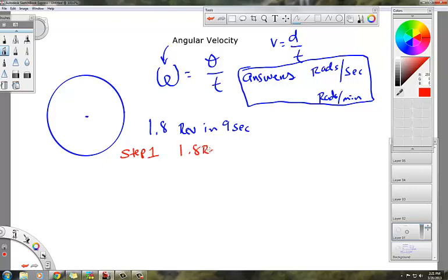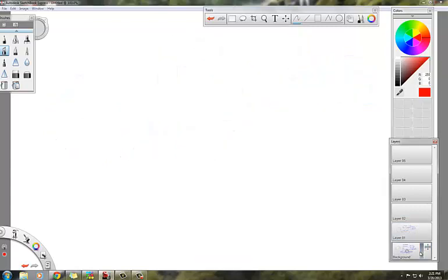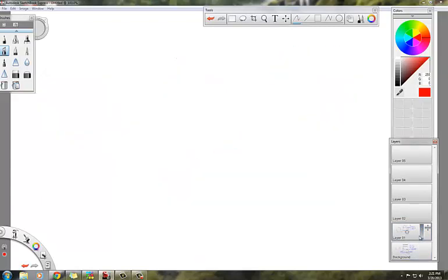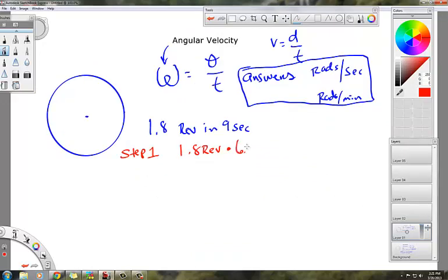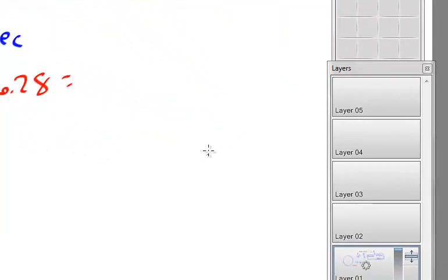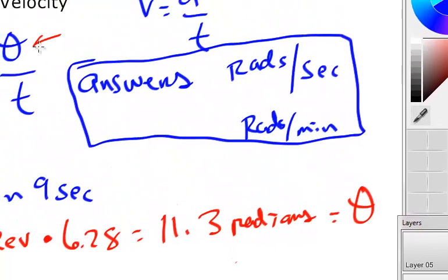Step 1 in doing this. You take the 1.8 revolutions, and you're going to multiply this, just like we did back here, by 6.28. So I'm going to take this step, multiply this by 6.28, and that is going to give me somewhere around 11.3 radians. Now, if we take this answer, which this right here is equal to this theta right here. So that's where all these variables hook together.